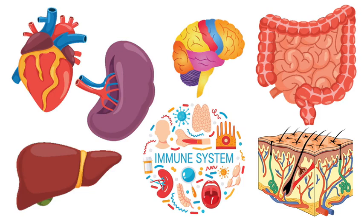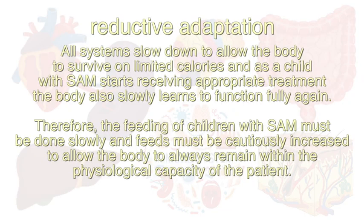Severe acute malnutrition has multi-systemic effects and affects all body organs and systems, including the brain, heart, kidney, liver, skin, hair, gut, and immune system. The mainstay in the pathophysiology of severe acute malnutrition is the reductive adaptation of all the organs in the body. This means that all systems slow down to allow the body to survive on limited calories.